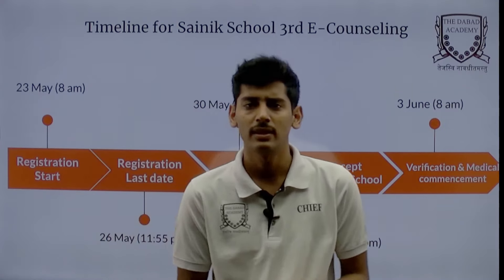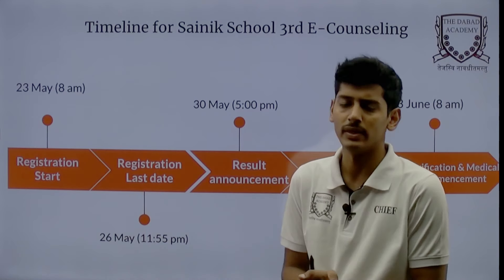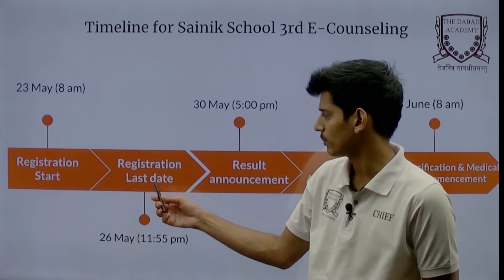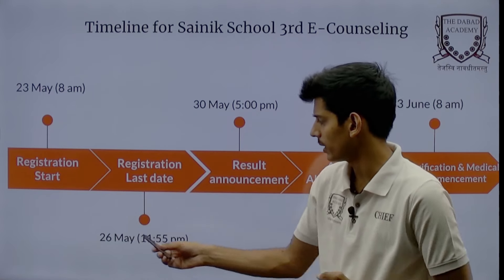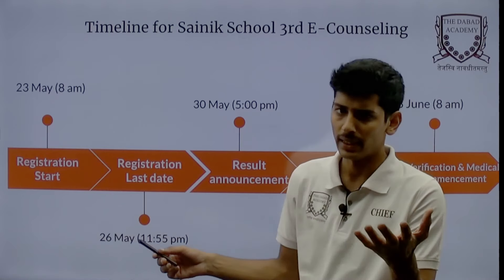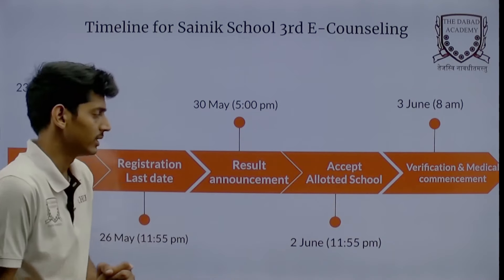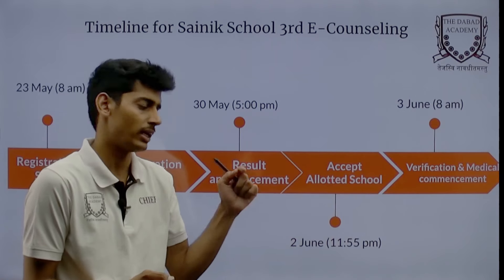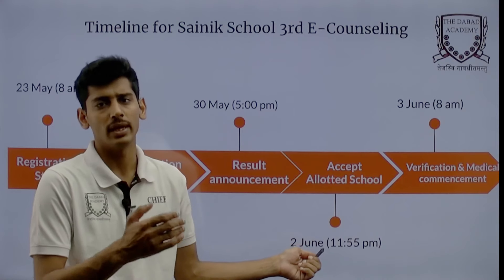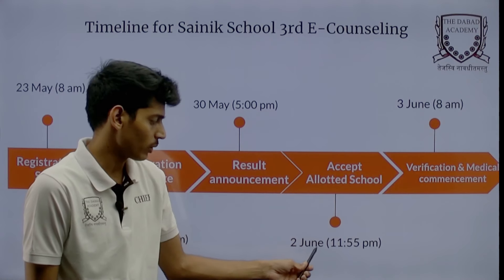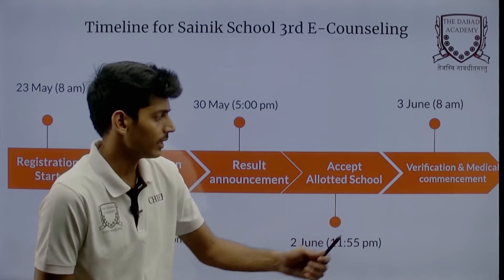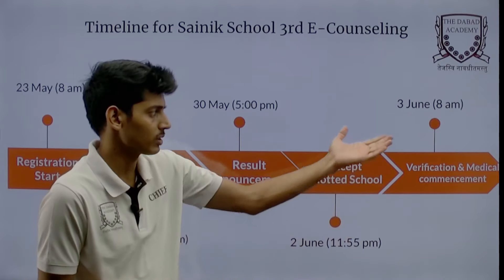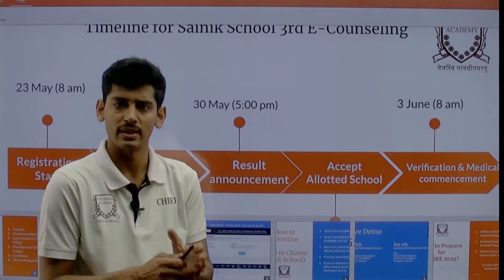As far as the timeline is concerned, the registration date for Round 3 was announced on 23rd May at 8 AM, and you have to lock your choices up until 26th May at 11:55 PM midnight. The result will be announced on 30th May. Once results are announced, you have to accept your allocated school by 2nd June at 11:55 PM. Then, all those students who are called for medical examination and verification of documents - that process will start from 3rd June onwards.